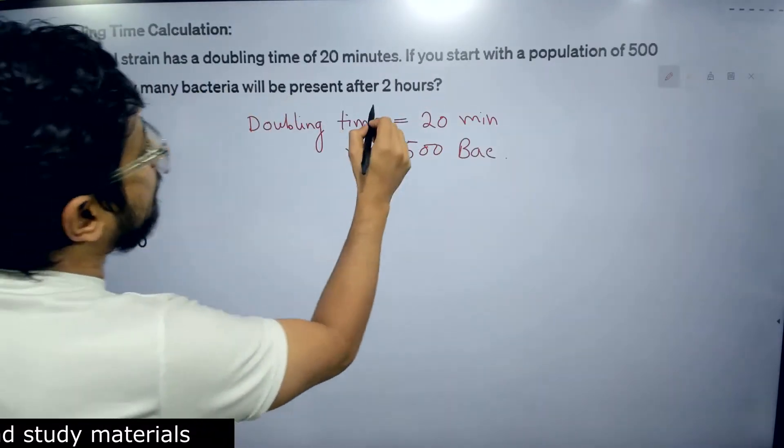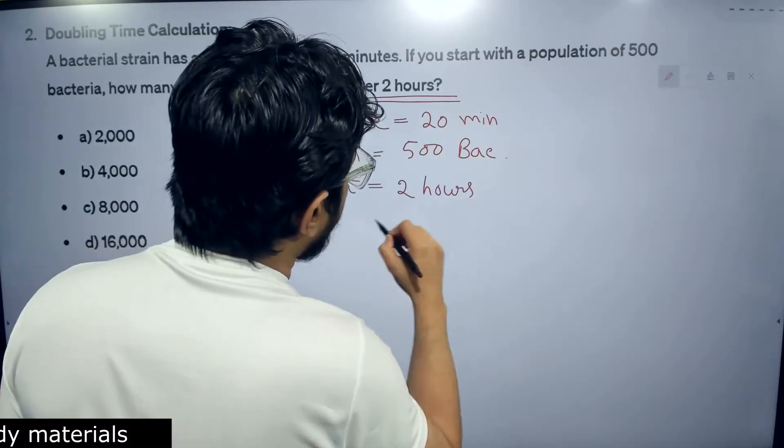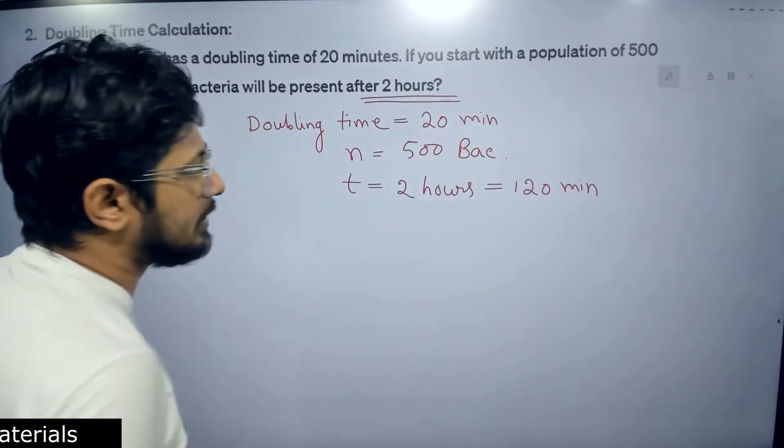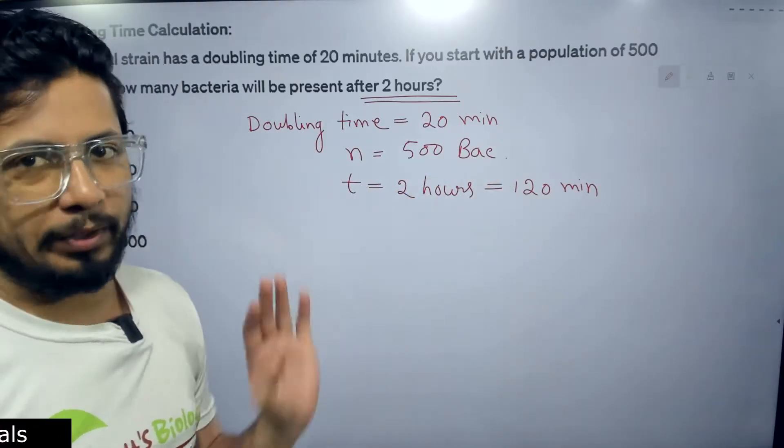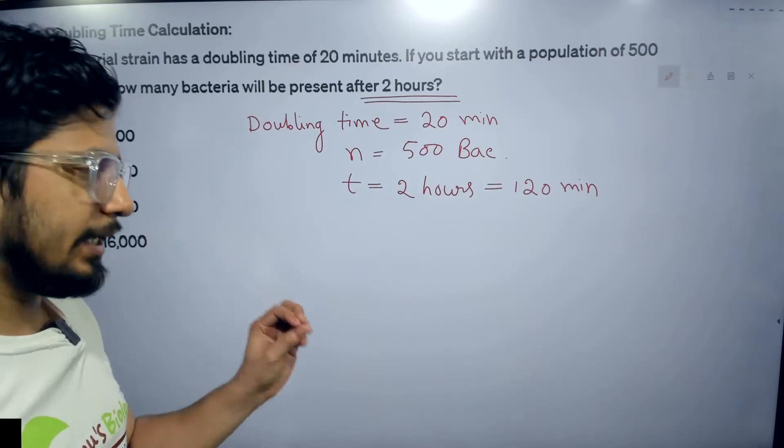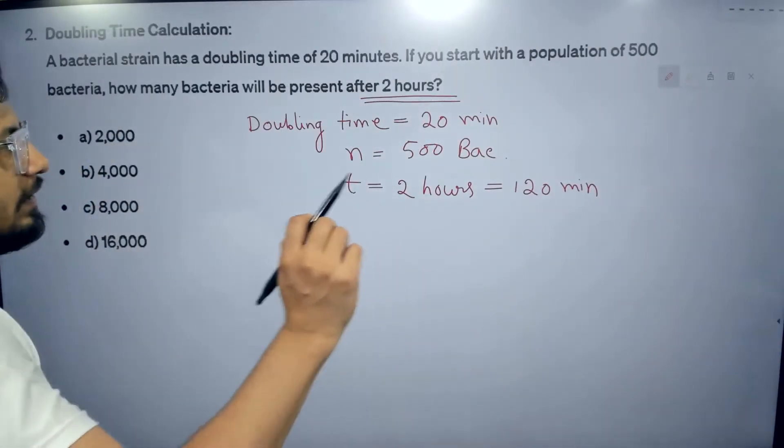How many bacteria will be produced after 2 hours? The total time here is 2 hours, that is 120 minutes. Because we have the doubling time in minutes, we need to also count everything in minutes. So 2 hours means 120 minutes. Here you have to calculate how many bacteria will be produced after 2 hours.